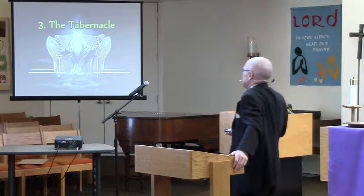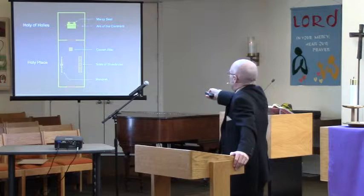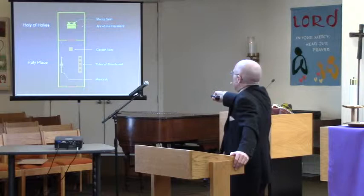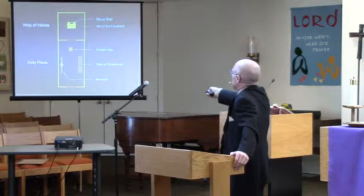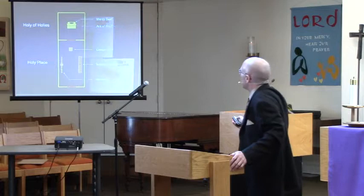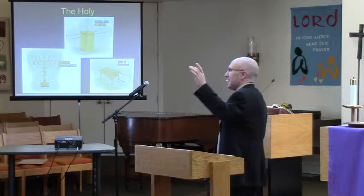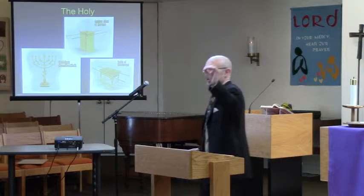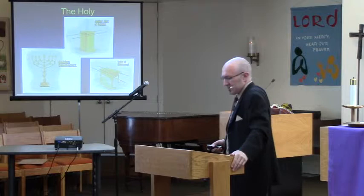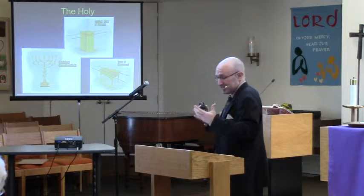There are two parts to the tabernacle: the holy place and the holy of holies. Everything in here is gold. There's one entrance to the holy place and one entrance to the holy of holies. You have the lampstand, the table of bread, and the altar of incense. The lampstand has seven lamps on it, symbolizing the seven days of creation and the light that came into darkness in Genesis 1 — the God of creation, life, and light. Psalm 119:105 says the word of God is a lamp to my feet and a light to my path — it keeps me from stumbling, from falling into darkness, and guides us.